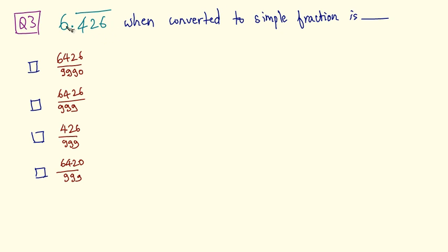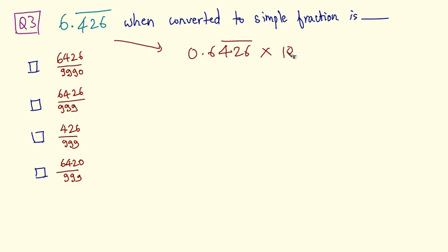In this question, we will first have to convert 6.426 recurring to an equivalent number. That comes out as 0.6426 where 426 is recurring, multiplied by 10. Now let us count: there is only 1 non-recurring digit and 3 recurring digits.